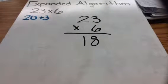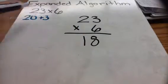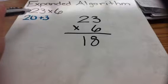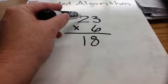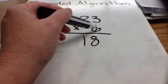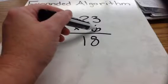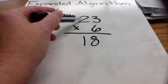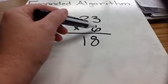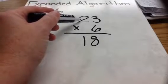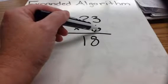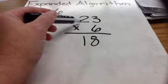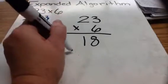The next step is to multiply the 6 by my tens. Most of the time you can just do this in your head. I know that this 2 represents 2 tens, which stands for 20. So, I'm not just multiplying 6 times 2 — I'm really multiplying 6 times 20. I can use the basic fact for 6 times 2 to help me. I know that 6 times 2 equals 12, so if I'm multiplying 6 by 20, then that answer is going to be 120.